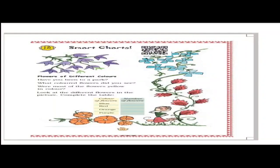This is page number 177, children — flowers of different colors. Here different flowers are given in different colors. There are four types of flowers with different colors: purple, blue, red, and orange. We will complete the table according to the color of flowers.